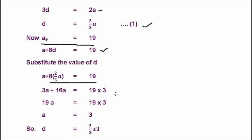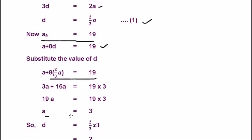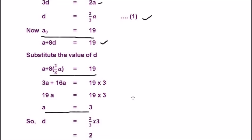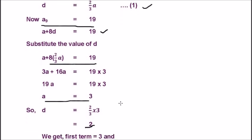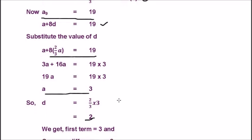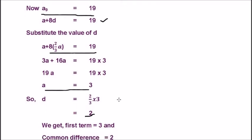So, D is equal to 2/3×3. That is, 2. So, here, we get the value of A that is equal to 3. That is, the first term of an AP. And the common difference D is equal to 2.